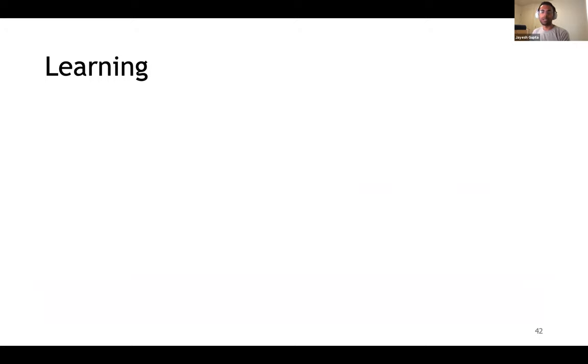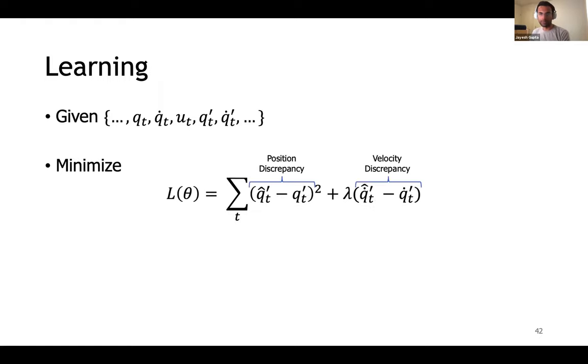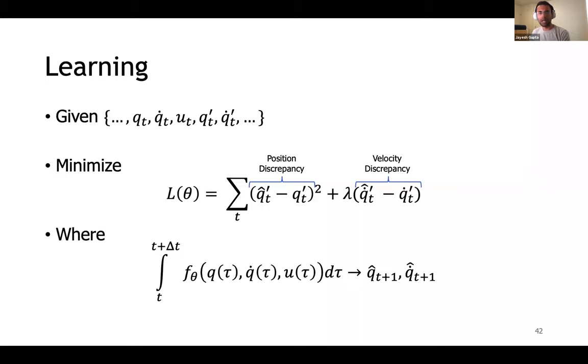Just to remind ourselves, the learning problem is simply a regression problem. Given a data set, our goal is to minimize the prediction error. This takes the form of minimizing the errors in positions and velocity predictions from a model F of theta. To scale with data, we can sample many batches from the data set to compute our loss and compute gradients of the loss via standard auto-differentiation machinery and optimize it via stochastic gradient descent.